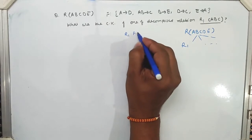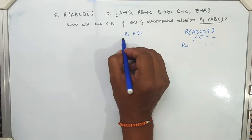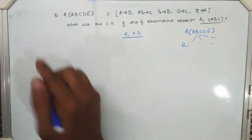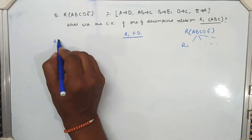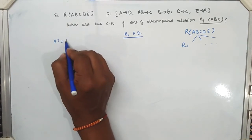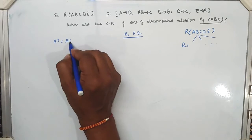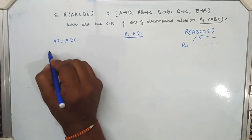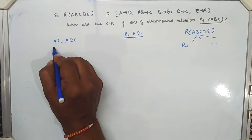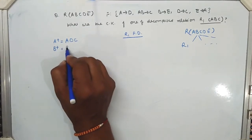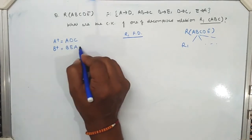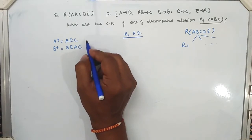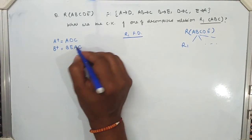A+ gives A, and A→D, D→C, so A+ = {A, D, C}. Now find B+: B+ starts with B, B→E, E→A, then A→B→C, so B+ = {B, E, A, C}. Also B→E is already there, so B+ covers all needed attributes.